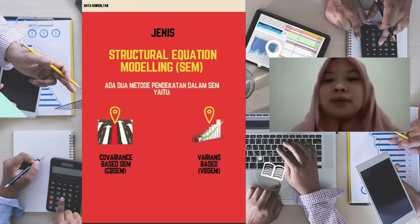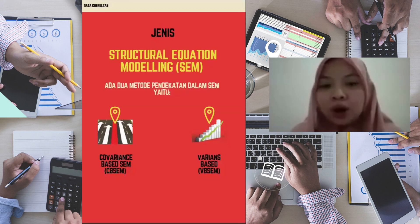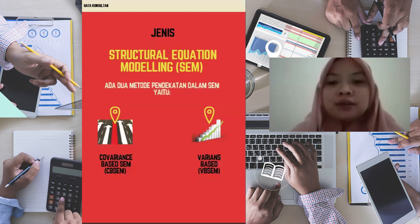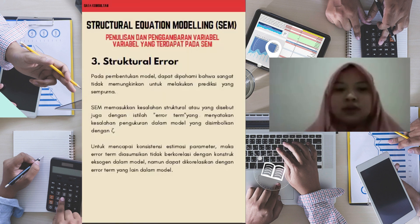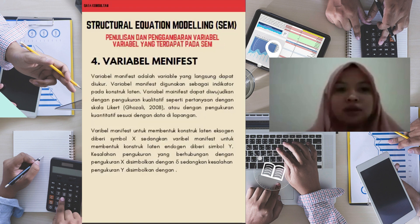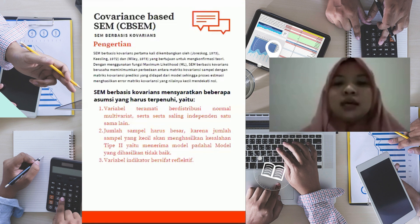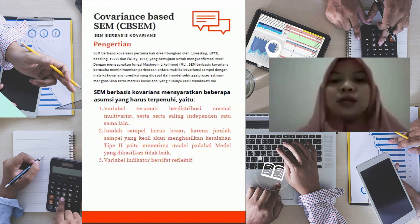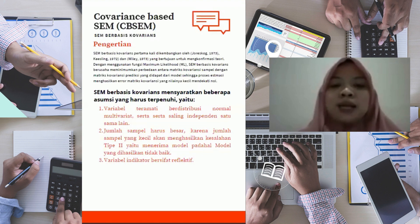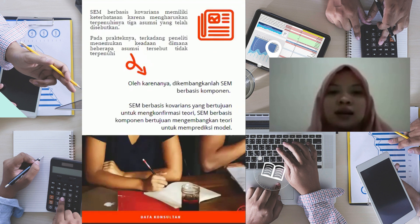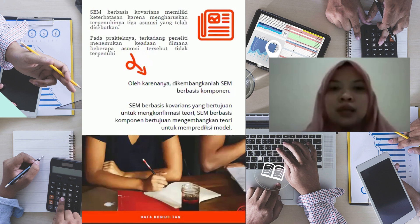Di dalam SEM ini ada dua metode. Yang pertama itu Covariance-Based SEM atau CB-SEM. Yang kedua itu Variance-Based SEM atau PB-SEM. CB-SEM ini mempunyai asumsi yang harus terpenuhi. Yang pertama, datanya harus berdistribusi normal, jumlah sampelnya harus besar, dan variabel indikatornya bersifat reflektif.